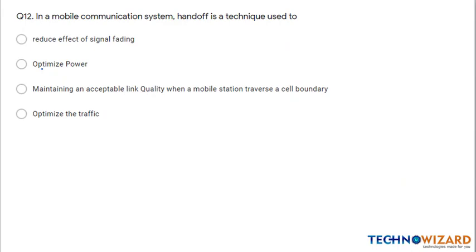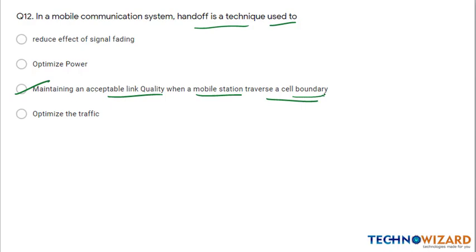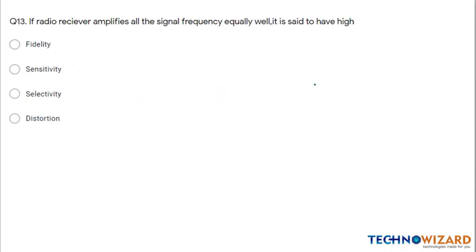Question 12: In a mobile communication system, handoff is a technique used to maintain an acceptable link quality when a mobile station traverses a cell boundary. Option C is the correct answer.